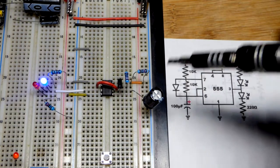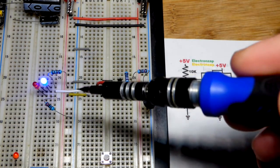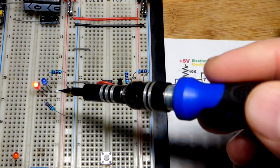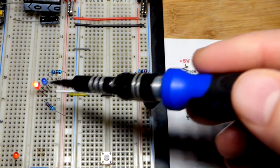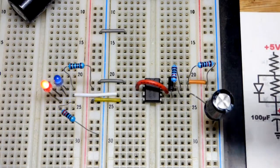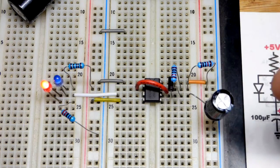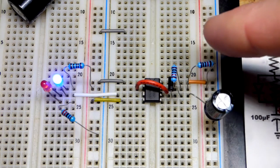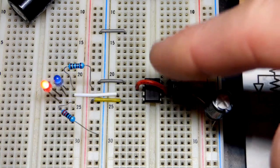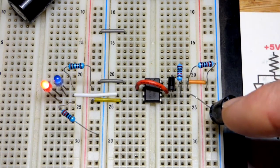A 555 timer wired in astable mode has no stable output. It keeps alternating between high and low. The speed that the output changes is mostly determined by a couple of resistors and a capacitor. Larger values take longer to alternate. Often you'll also see a diode.